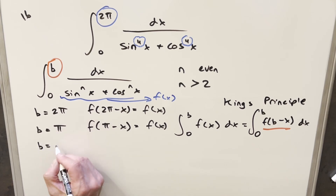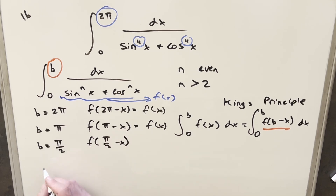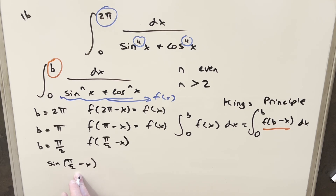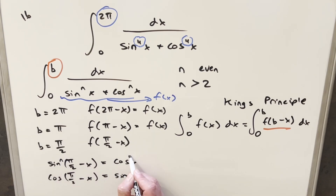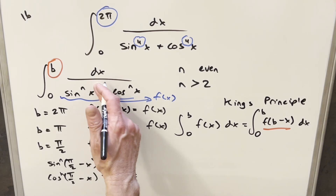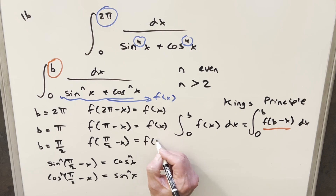And one more value: b = π/2. We want f(π/2 − x). sin(π/2 − x) equals cos(x) by the complementary angle formula. cos(π/2 − x) equals sin(x). Raising both to the nth power and plugging back in, we get cos^n(x) + sin^n(x), which is the same thing in a different order. So f(π/2 − x) = f(x) as well.